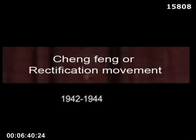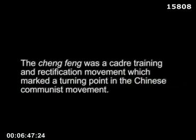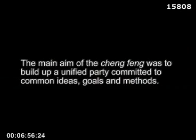At that critical juncture, Mao initiated the rectification movement, also known in Chinese as the Zheng Feng movement. The period was 1942 to 1944. The Zheng Feng movement was essentially a cadre training program and marked a turning point in the history of the Chinese Communist movement. Its main aim was to build the Chinese Communist Party on a unified basis, committed to common goals, common aims, and common methods. It was a Marxist movement, but the emphasis was on the creative application of Marxism to the concrete situation in China, rather than any mechanical application of it.